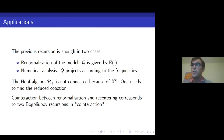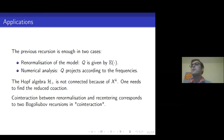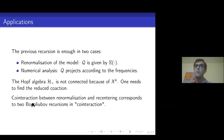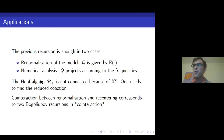One also remarks that the co-interactions between the two renormalizations — recentering and BPHZ-renormalization — correspond to two twisted antipodes and two Bogolubov recursions. The co-interaction tells you that you can apply one Bogolubov recursion to produce a character, then apply the second Bogolubov recursion to that character. The co-interaction property tells you that you can switch the order of the two Bogolubov recursions.